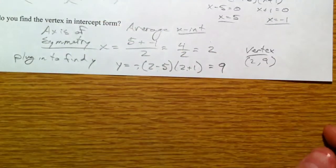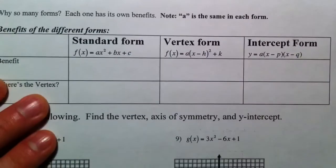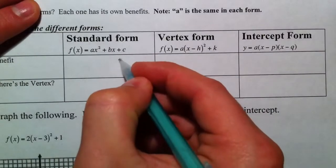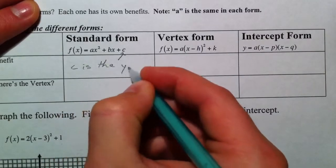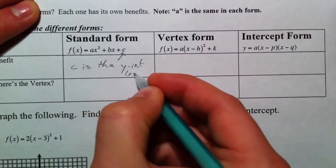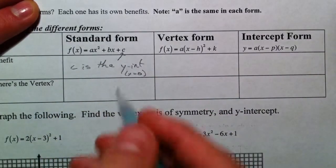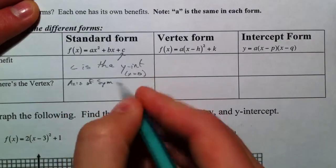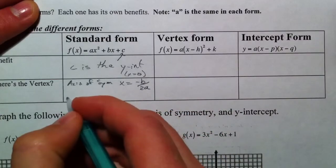So we've dealt with the different forms and the exact same graph in the different forms. And so I wanted to just sum it up again, how we saw all of these different forms. The benefit of the standard form is c is the y-intercept when x equals 0. Because when you plug in x equals 0, that cancels out, that cancels out, and you just get c. To find the vertex, axis of symmetry is negative b over 2a. That finds where the middle is, and then plug in to find y.